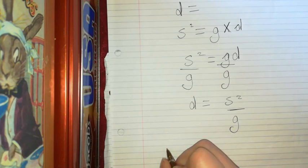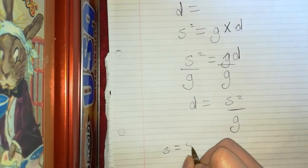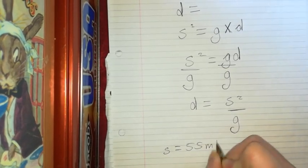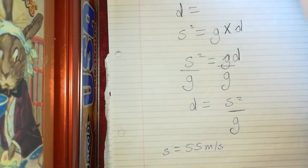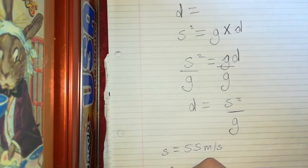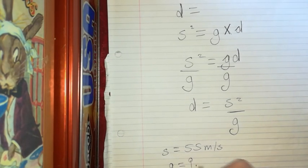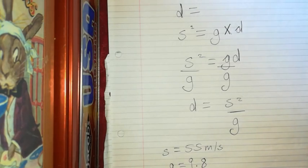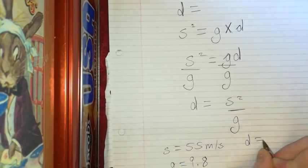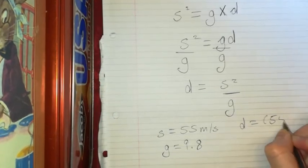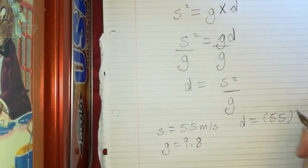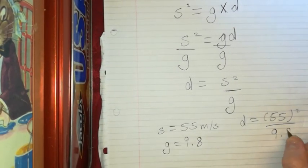And we know that g they tell us is a constant rate. So it's going to be 9.8. So the depth is going to be 55 squared, which is the speed squared over 9.8.